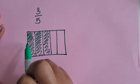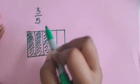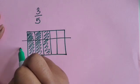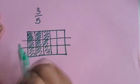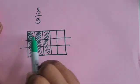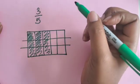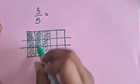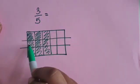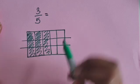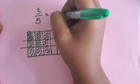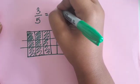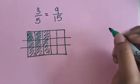Now I'm going to partition the rectangle into 3 rows. I partitioned it twice and now we have 3 equal rows going across. So now what are my total amount of parts? We have 1, 2, 3, 4, 5, 6, 7, 8, 9, 10, 11, 12, 13, 14, 15 total parts. And we have 1, 2, 3, 4, 5, 6, 7, 8, 9 parts shaded in.